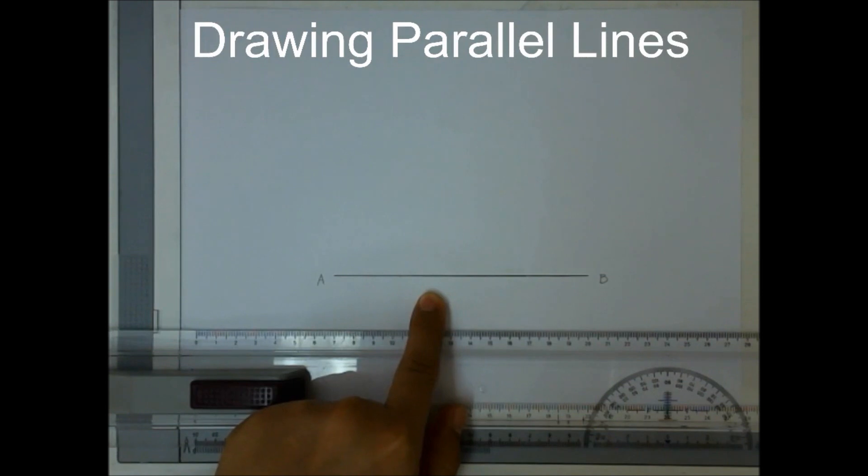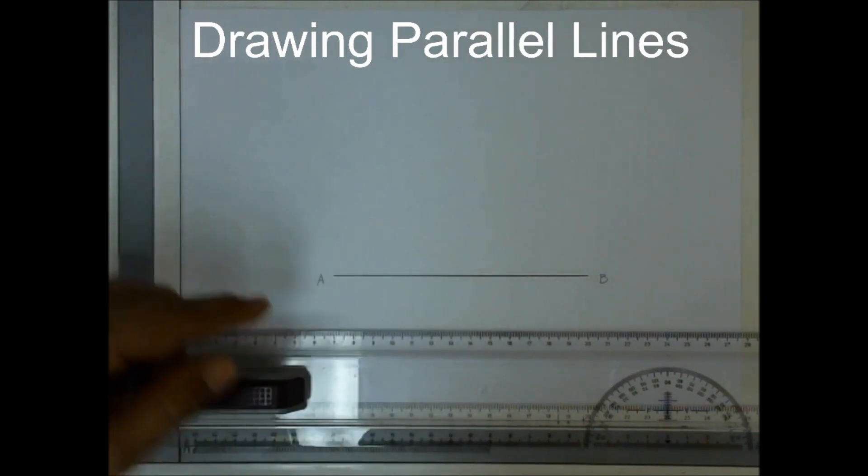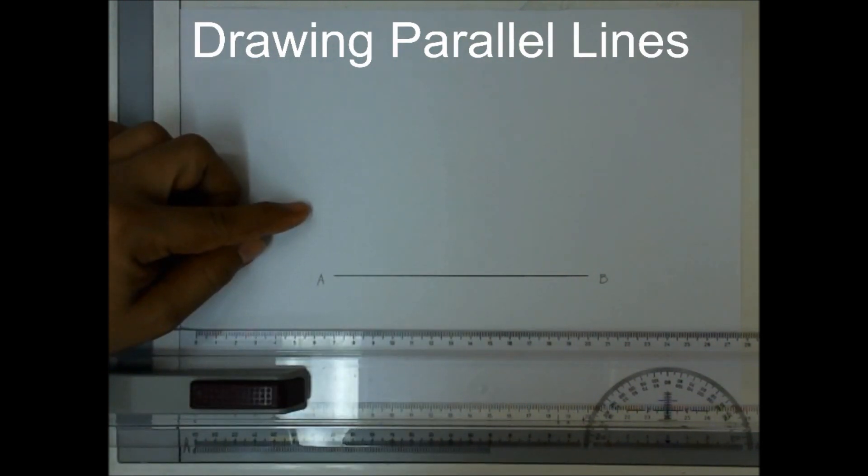Now, we have line AB right here. I will show you now how to make another line right on top of this line AB which is parallel to each other.